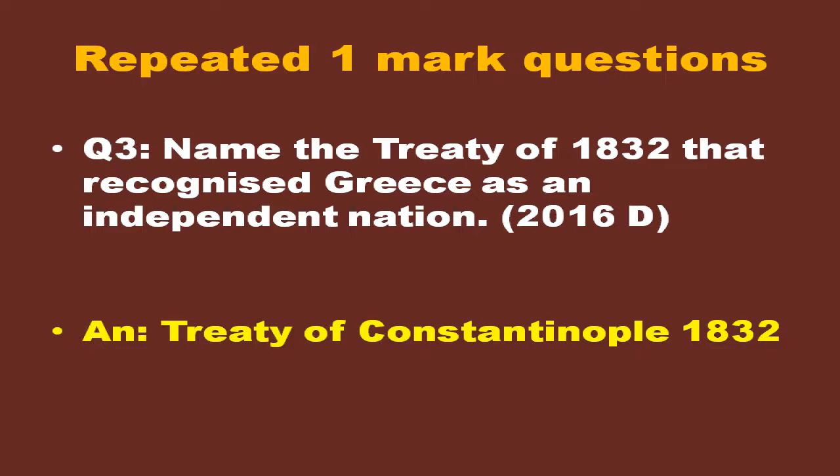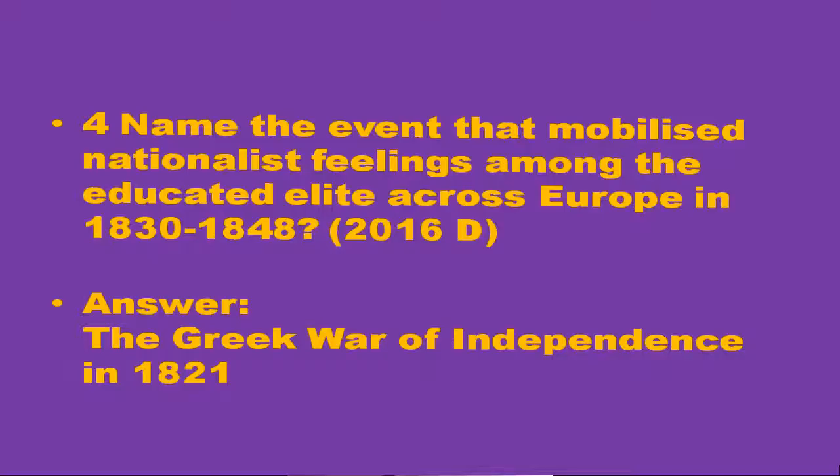Question number 3: Name the treaty of 1832 that recognized Greece as an independent nation. The answer is the Treaty of Constantinople. Question number 4: Name the event that mobilized nationalist feelings among the educated elite across Europe in 1830 to 1848. The answer is the Greek War of Independence in 1821.